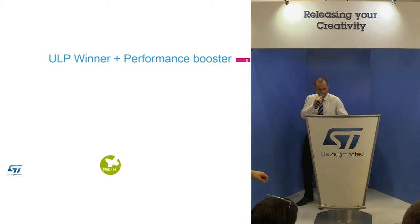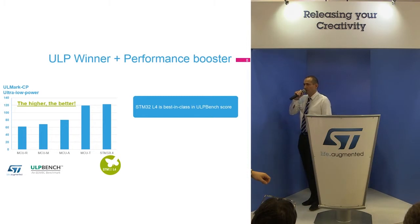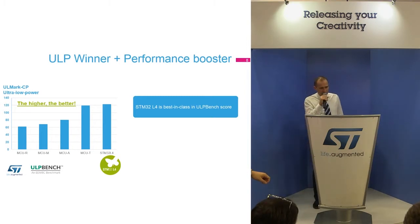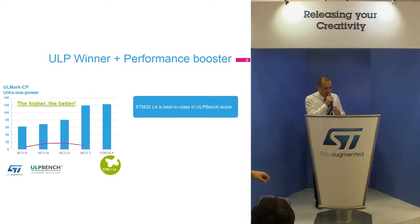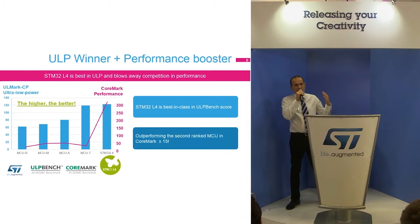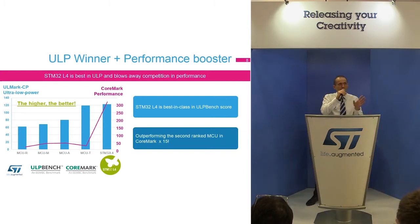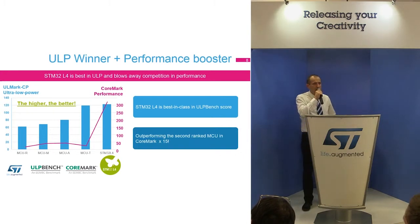Now let's look at the results. You can see several measurements done on several MCUs. The best score is obtained by the STM32L4 with a score of 123 — it is the best in class in ultra low power. But now let's add the performance dimension using the CoreMark. You can see that the STM32L4 really blows away the competition in ultra low power, and you get 273 in CoreMark. So you have the best in class in terms of ultra low power plus a lot of performance.